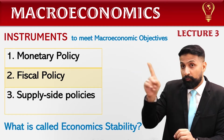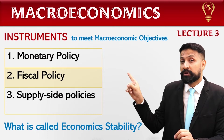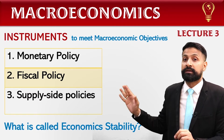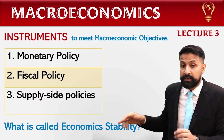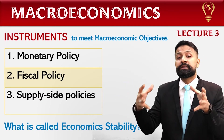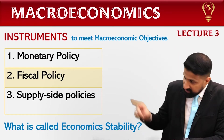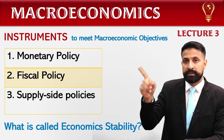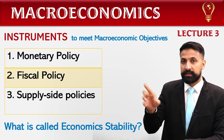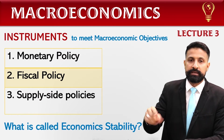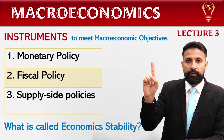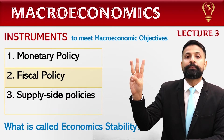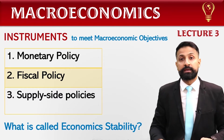ٹھیک ہے، یہ تین instruments ہیں جو government use کرتی ہے اپنے macroeconomic objectives کو achieve کرنے کے لیے۔ میرے ساتھ repeat کرو: instrument number one — monetary policy، number two — fiscal policy، number three — supply side policies۔